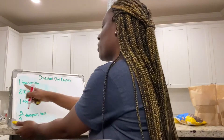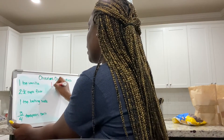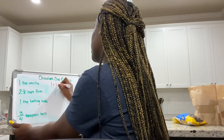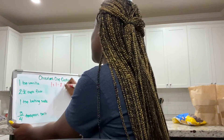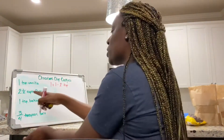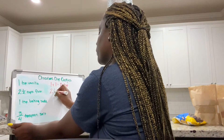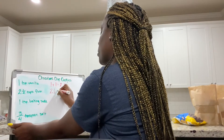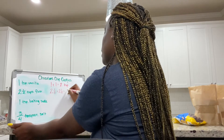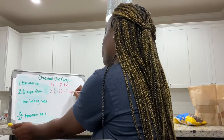Starting with my one teaspoon of vanilla — I only need one teaspoon for 30, so I'm going to add another teaspoon for 60, and now I need two teaspoons. Next we have two and a half cups of flour. I'm going to add another two and a half cups, and now that gives me five cups of flour.